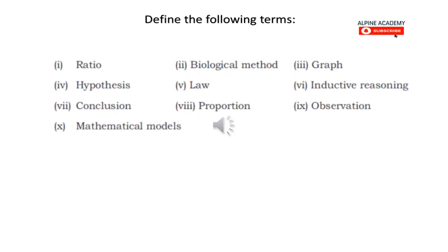Biological method: the system of advancing knowledge by formulating a question, collecting data through observation and experiment, and testing a hypothetical answer about living things is called biological method. Graph: graphing is an important procedure used by scientists to display the data collected during a controlled experiment. Hypothesis: hypothesis is an idea suggested as an explanation for a natural event, particular experience, or specific condition that can be tested through definable experimentation.